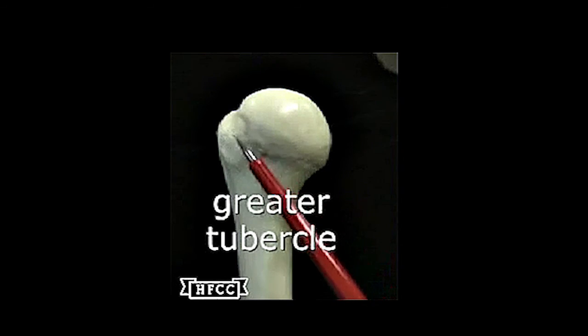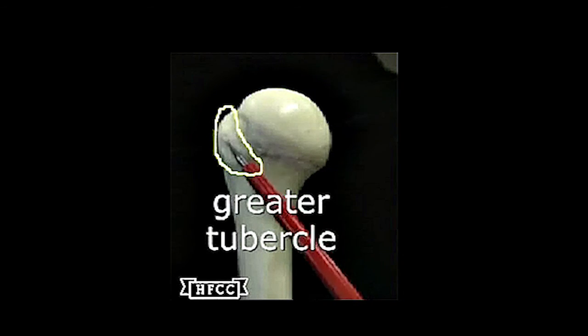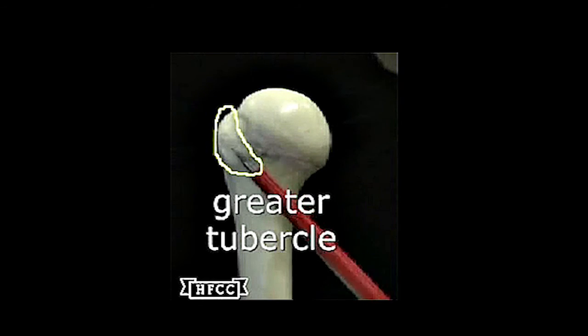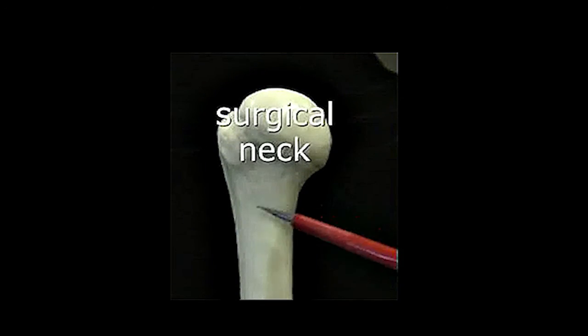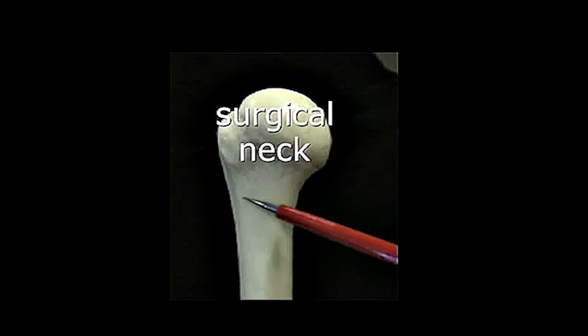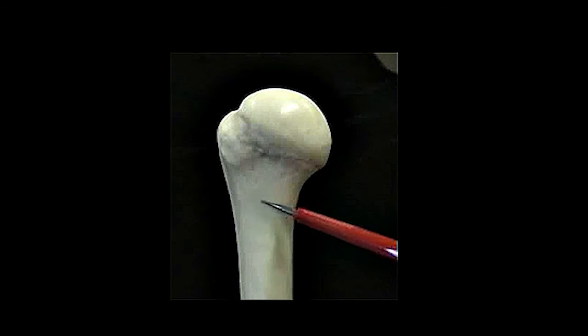And then this bump over here, the greater tubercle, it is continuous with the other side. That is on the anterior, also. And the surgical neck, that again is a 360, or wraps around the bone there. A lot of surgery is done on that when you have a broken humerus.